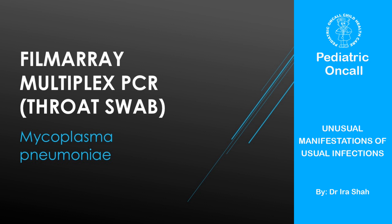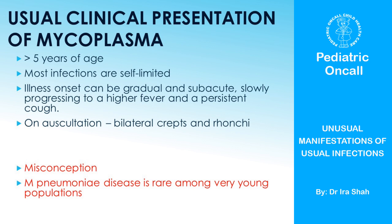We found Mycoplasma pneumoniae. Now what we have been taught about Mycoplasma pneumoniae is that it usually occurs in school-going age children — more than five years of age — most infections are self-limited, illnesses of gradual subacute onset progressing to high-grade fever and persistent cough, and on auscultation you get crepts and rhonchi. But I think it's a myth. If you really look for mycoplasma, you'll pick it up at any age. So the first myth — that it occurs only in school-going age children — is wrong.